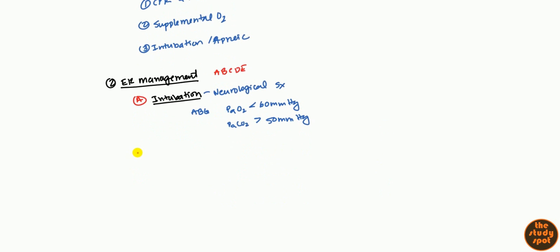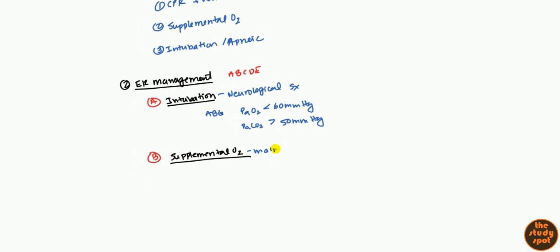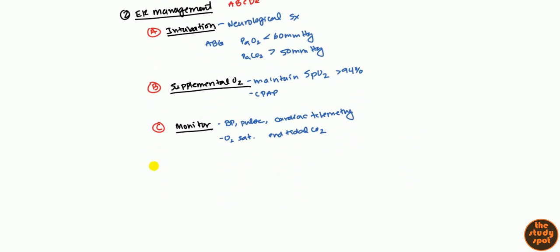and your goal in giving them supplemental oxygen is to maintain the oxygen saturation above 94%. And this oftentimes is given through a CPAP, so that's how we do that. For circulation, you want to monitor that. The circulatory system isn't always affected unless there's some type of arrhythmia, but this is primarily respiratory. But you do want to monitor the blood pressure, you want to monitor the pulse. You can do cardiac telemetry as well. And at the same time, you can check the oxygen saturation and even the end-tidal carbon dioxide. So that's what you want to do as far as monitoring goes.